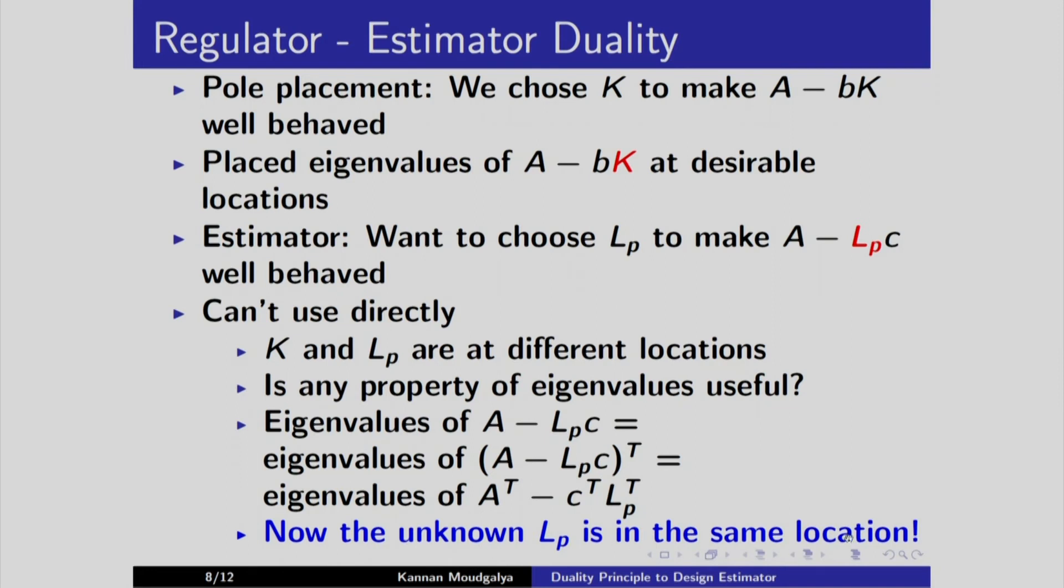Now, the unknown Lp is in the same location. We are ready to use the Ackermann's formula that we derived for the pole placement controller.